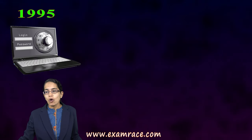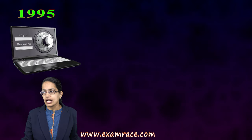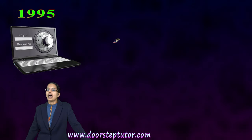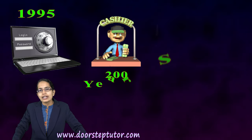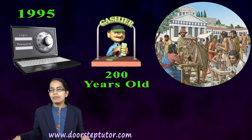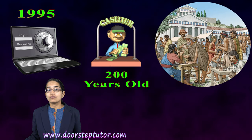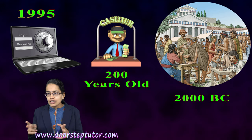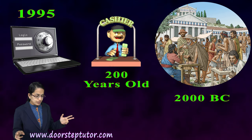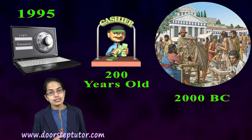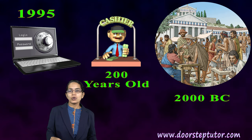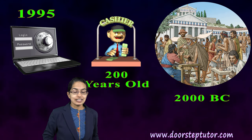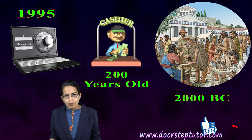Internet banking, or e-banking, started around 1995, while commercial banking itself is only about 200 years old. In contrast, banking as a practice is traced back to 2000 BC. The oldest known banking records were found in Babylonia and Assyria, where loans were granted to farmers and traders. That covers the topic of money.